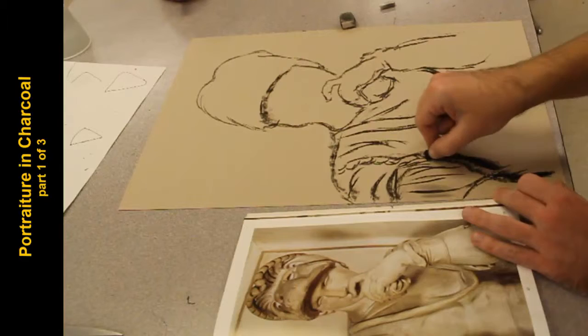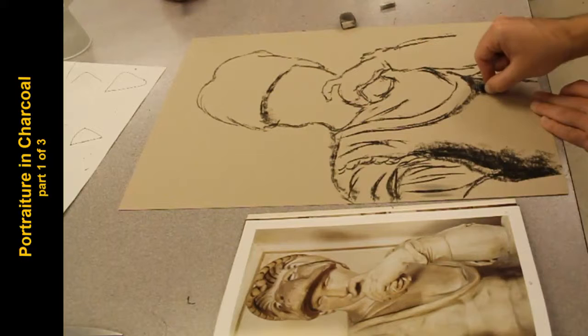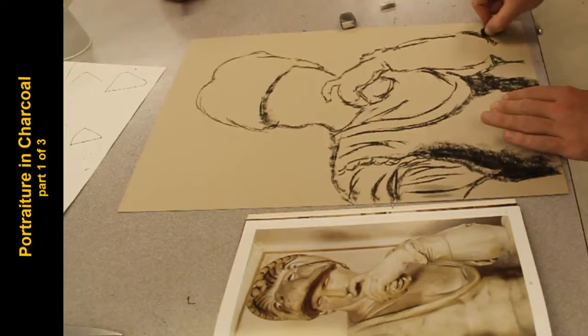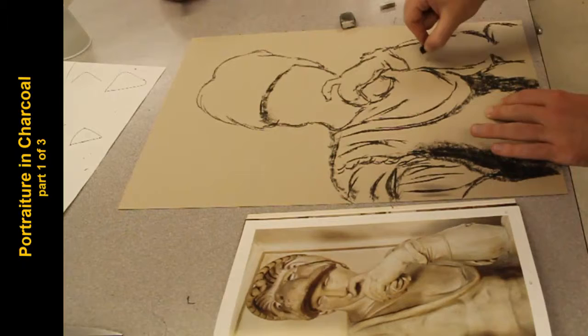Now I'm going in and I'm sort of blocking in the dark areas. Just like I did in Photoshop. Using the side, the full side to get a lot of coverage very quickly. I'm not being super accurate. I'm just trying to get the base down and I can readjust it later. Same thing for these lines. I'm just trying to get it down and I can adjust it later.